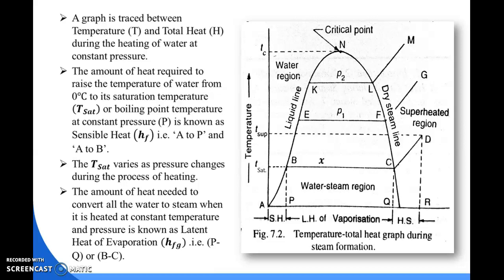A to P is the amount of sensible heat required to convert the water from 0 degrees centigrade to its saturation or boiling point temperature. Similarly, the amount of heat required to convert all the water to steam when heated at constant temperature and pressure is known as the latent heat of evaporation, that is HFG. In the graph, on the x-axis, it is PQ. So PQ is the HFG, or latent heat of evaporation, when water is heated at constant temperature and constant pressure. Here we know the sensible heat and the latent heat of evaporation.